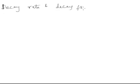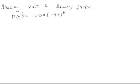The difference between decay rate and decay factor: the population of a town follows the model p(t) equals 1000 times 0.93 raised to t. Just as we calculate the growth rate or growth factor, similarly for decay, whatever is the base for the exponent t is called the factor.